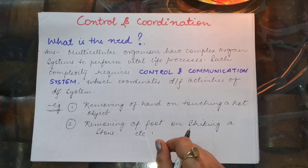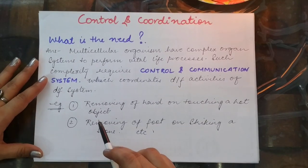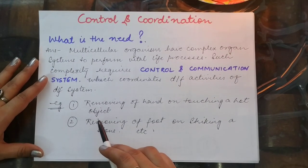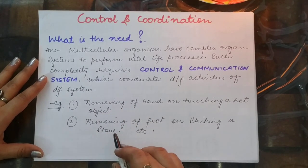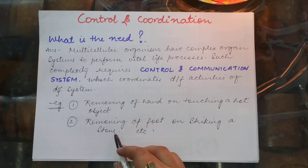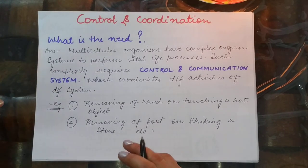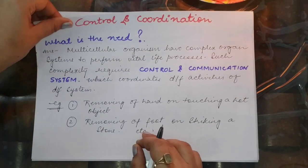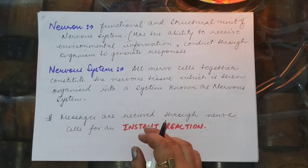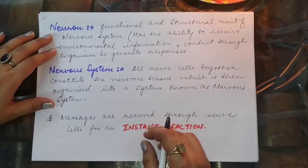Examples showing control and coordination include removing your hand when you touch a hot pan, or removing your foot when you strike a stone or metal object — basically a knee jerk reaction. When we start with this chapter, one component which is very important is the neuron.